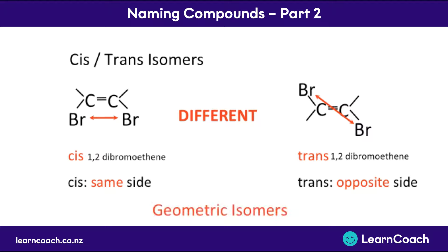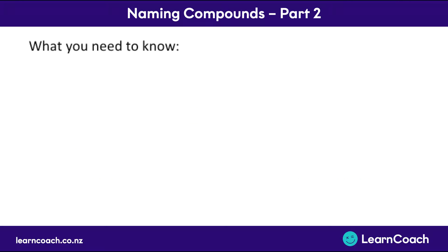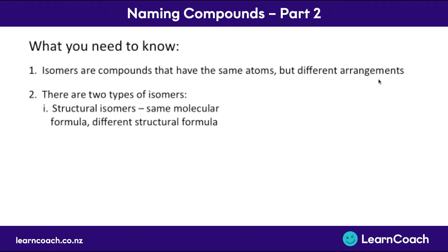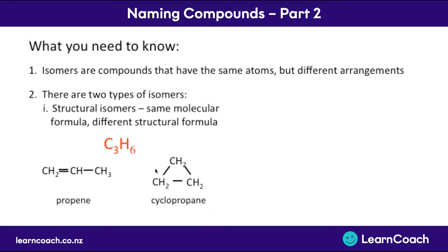These cis-trans isomers are called geometric isomers, and that's the second and last type of isomer you'll need to know. So here's what to take away: isomers are compounds or molecules that have the same atoms but different arrangements. The first type we looked at was structural isomers — we've got the exact same molecular formula, for example C3H6 (three carbons and six hydrogens), but a different structural formula. So we could arrange C3H6 as propene, or as cyclopropane.